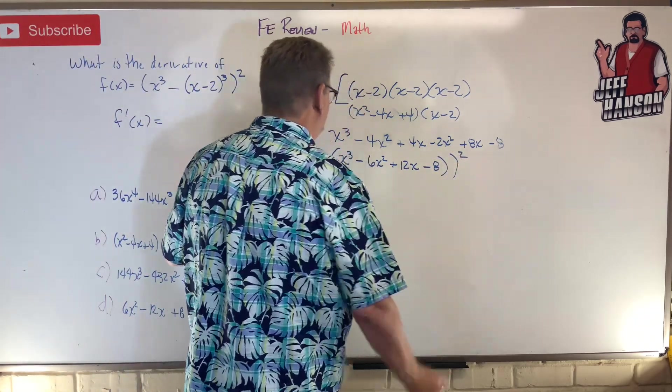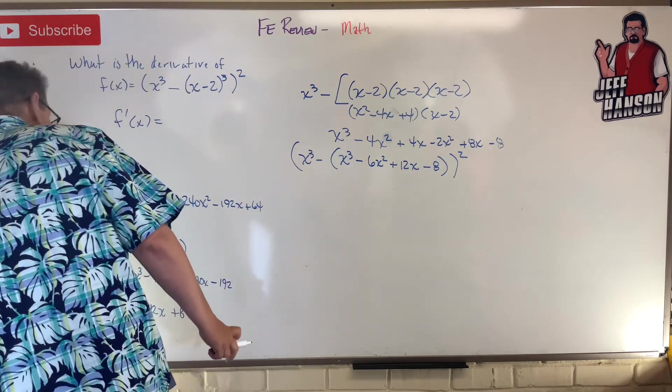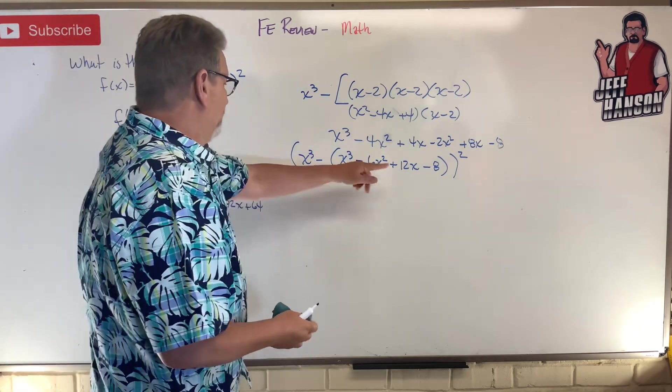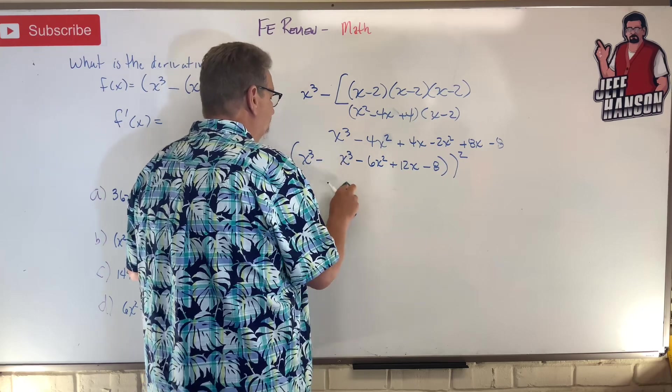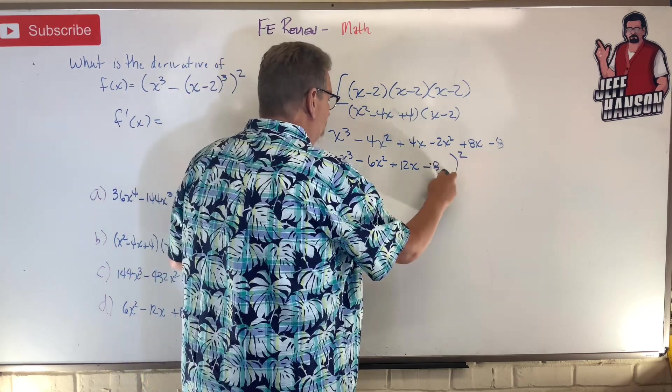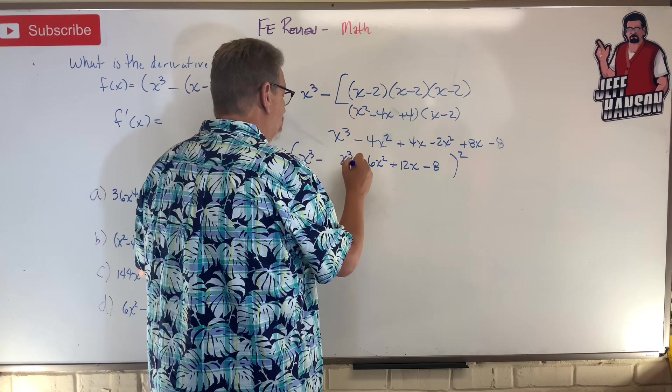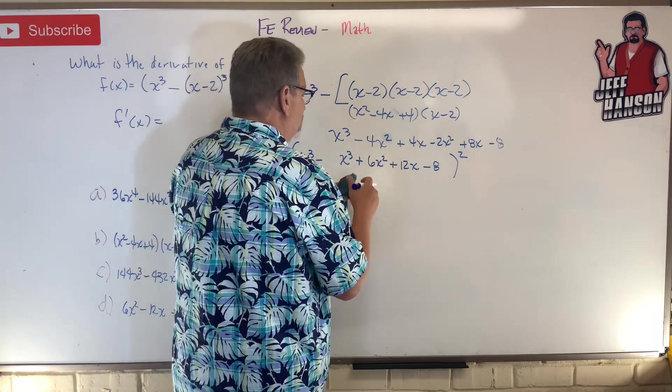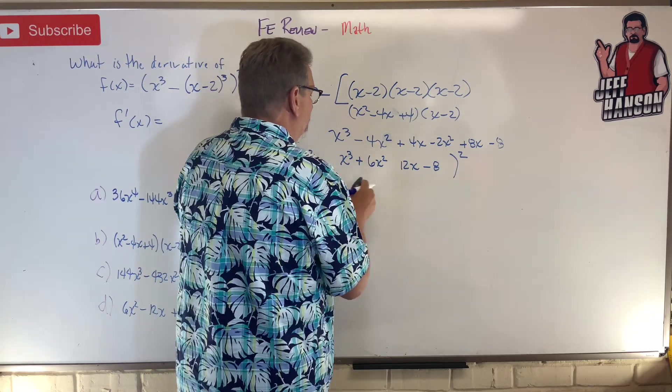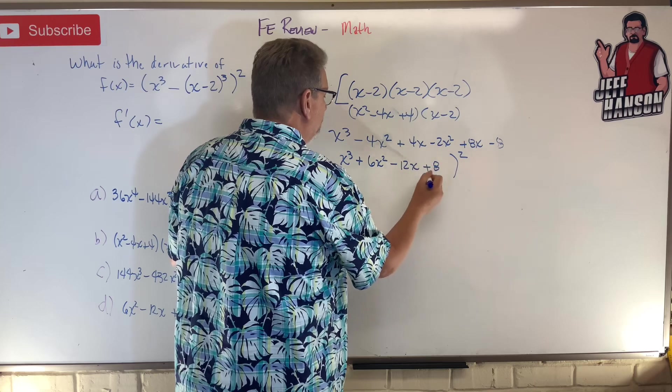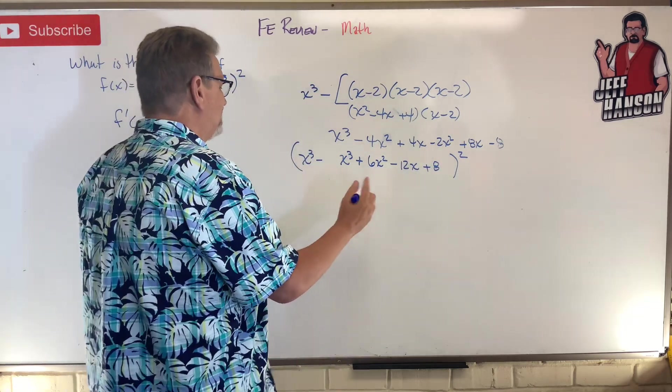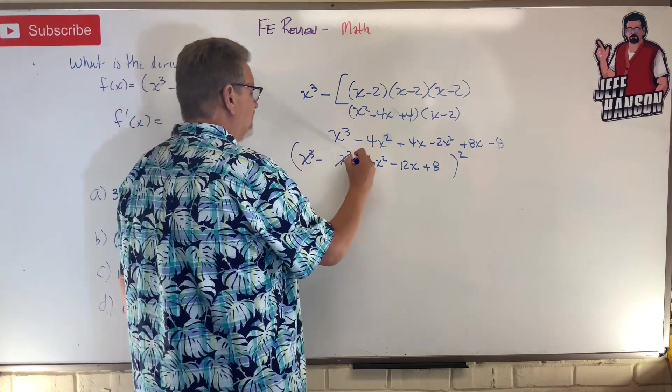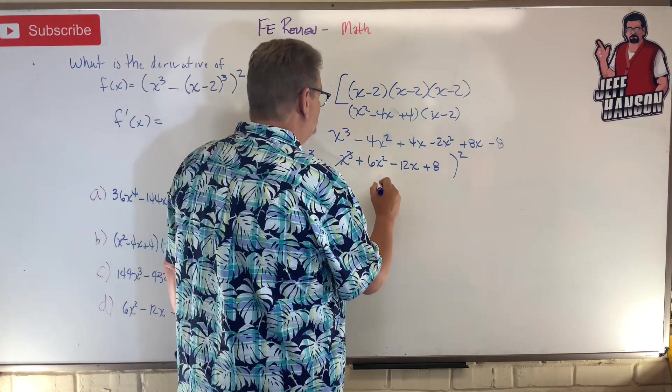If we distribute this negative through that thing, that means all right, if this one becomes negative, this one becomes positive, this one becomes negative, this one becomes positive. Then let's see if this thing simplifies. This looks pretty tasty right there.